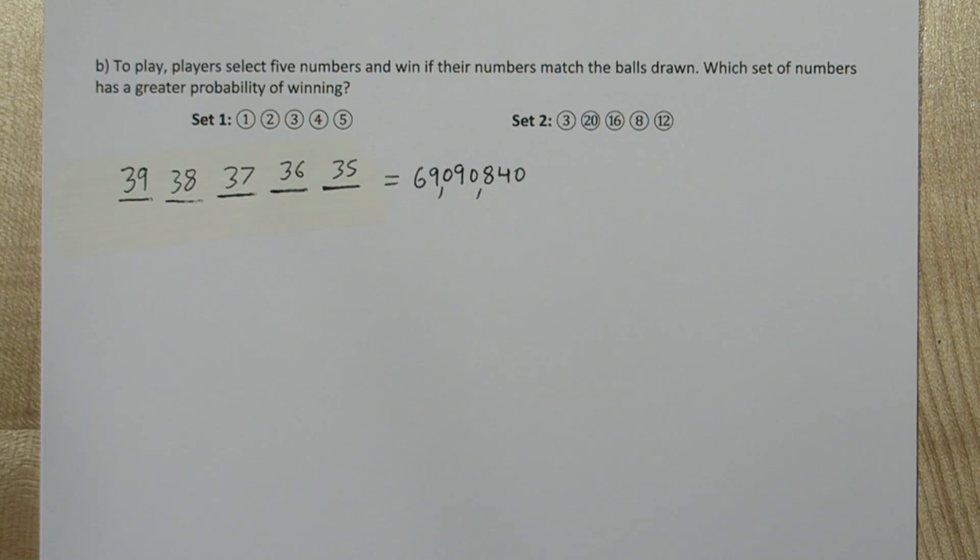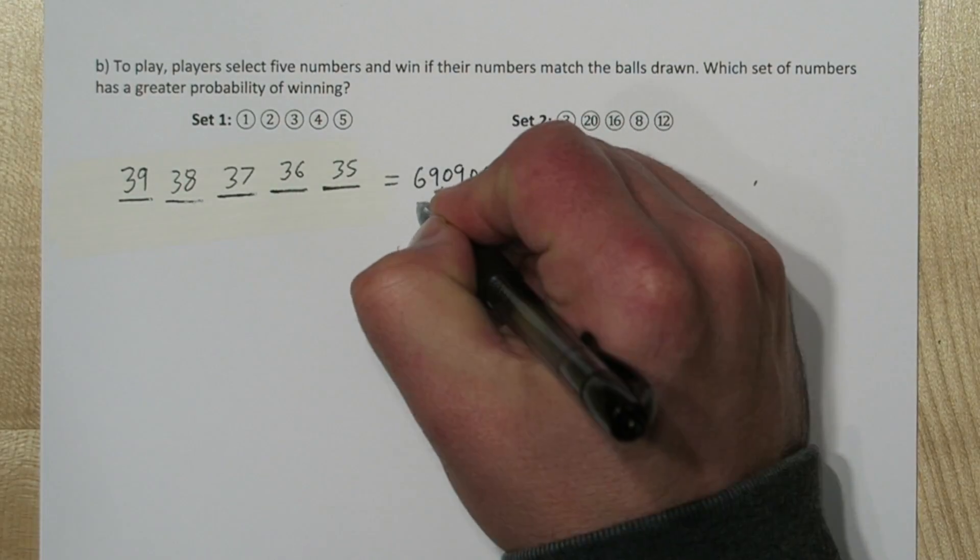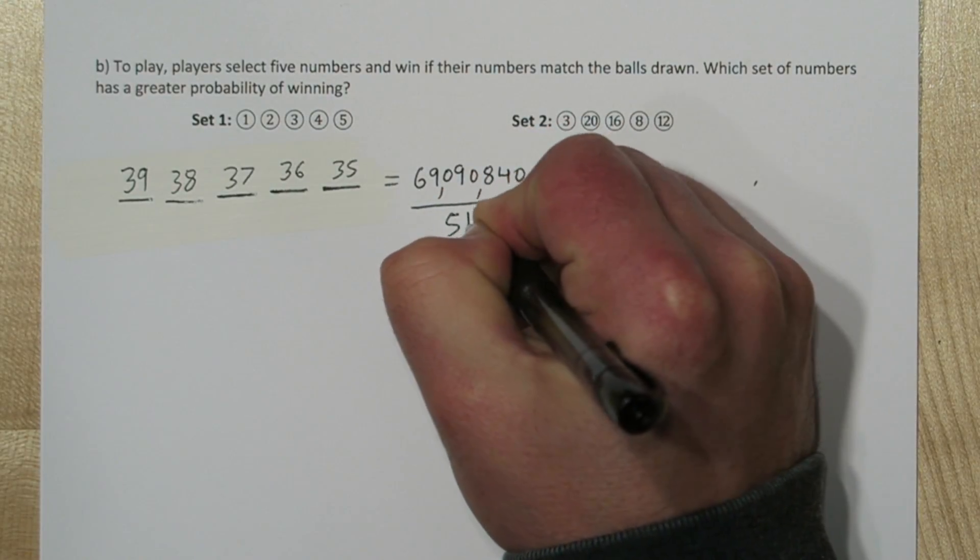However, the order in which the numbers are drawn doesn't matter. So many of these 69 million ways are actually duplicates, just the same numbers drawn in different orders. So to correct that, we just need to divide by 5 factorial, the number of ways 5 unique numbers can be arranged.